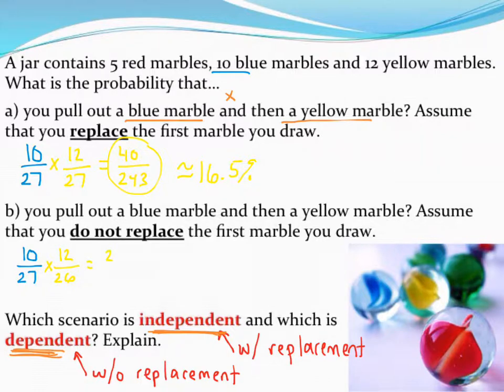Using a calculator gets me a probability of 20 out of 117 or this time a slightly higher probability of about 17.1%. Since I've gotten rid of one of the marbles, the chances of getting the one I want are slightly higher.